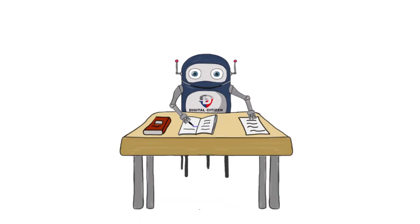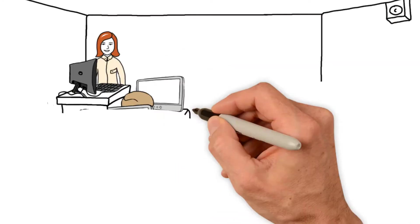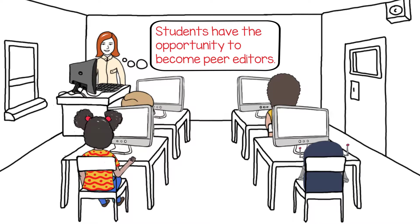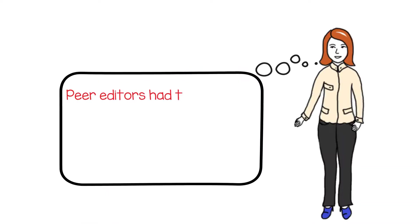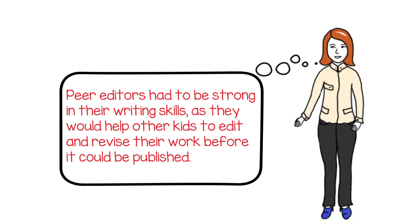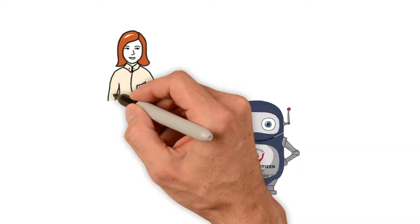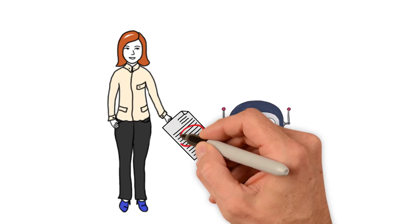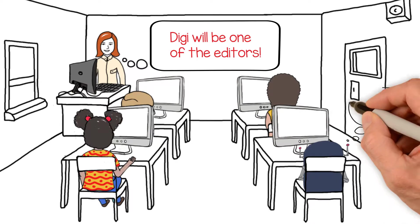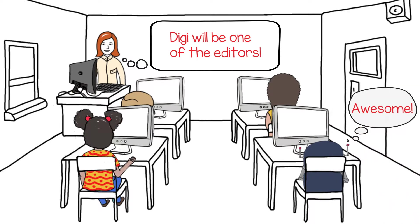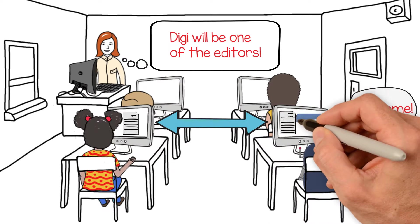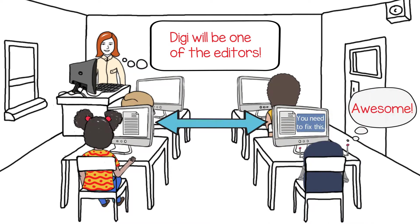Digi was a very strong writer. He was so excited one day when his teacher announced that students had the opportunity to become peer editors. Peer editors had to be strong in their writing skills, as they would help other kids to edit and revise their work before it could be published. Digi had to apply for this job by correcting a paper that was full of mistakes. He was so excited when the teacher announced that he would be one of the editors. Digi was happy to help his classmates when they shared their writing with him online, and he would create online comments to tell them how they could improve.